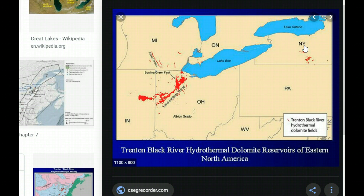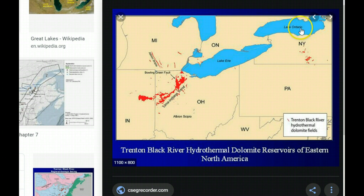This image here shows areas where they know they have oil and gas deposits. It was formed back when the separation occurred. Here we've got Lake Ontario and we've got New York.